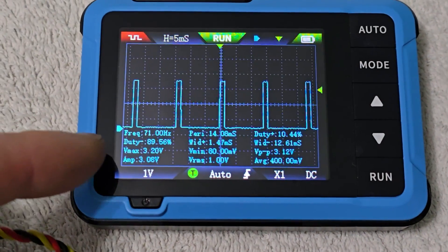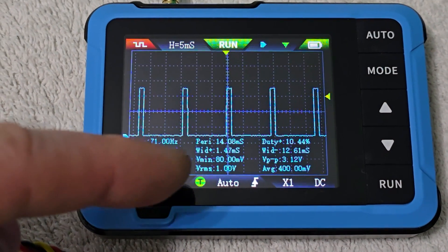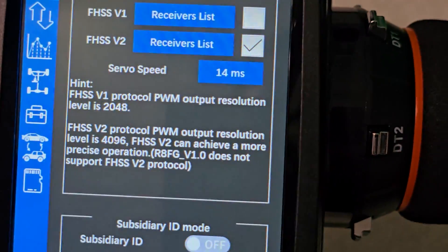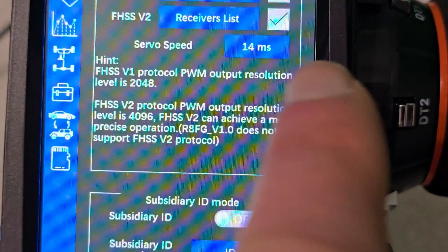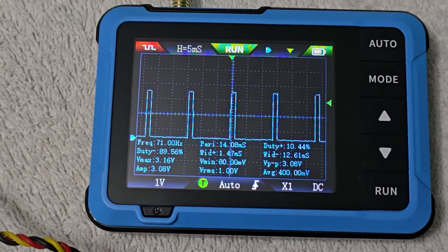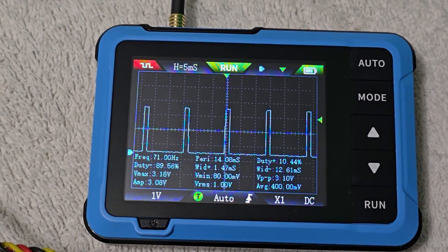Now we can see exactly what the frequency and period are, and this corresponds to the period we're using here. Our servo speed is 14 milliseconds, and we're seeing 14 milliseconds on the screen, so that checks out.